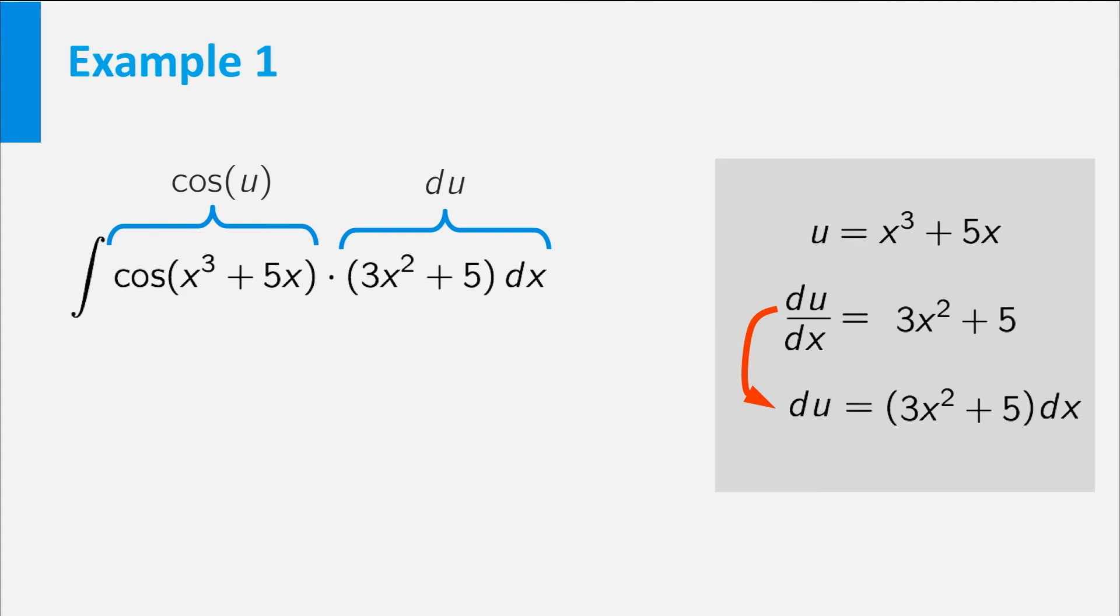The whole integral has now been re-written as the integral of cosine u du. This is much easier to evaluate. It is equal to sine of u plus c. In the final step, we replace u by x cubed plus 5x, which gives the result sine of x cubed plus 5x plus c.